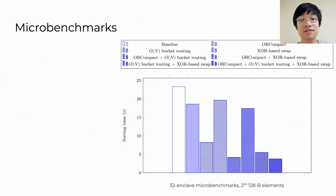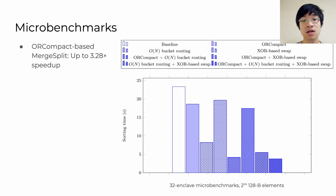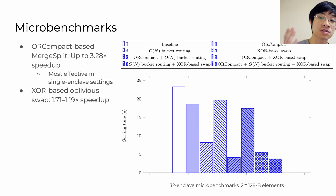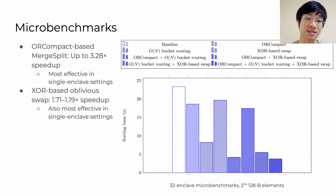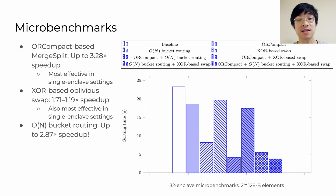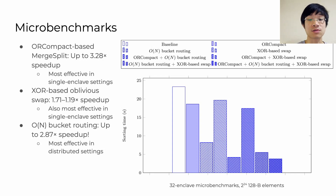We also have some interesting microbenchmarks breaking down the impact of individual optimizations. The OR compact merge-split optimization achieves up to a 3.28x speedup in the single-enclave setting. The XOR-swap-based oblivious swap achieves up to a 1.7x speedup in the single-enclave setting. And the O(n) bucket routing gets us up to a 2.87x speedup in the distributed setting, which we would expect to increase as we add more and more enclaves.